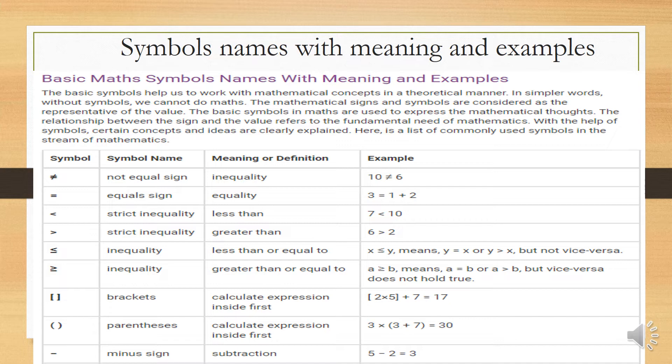The second symbol is the equal sign — meaning: equality. Example: 3 equals 1 plus 2, the answer is 3, meaning they are equal.